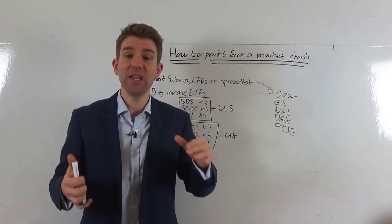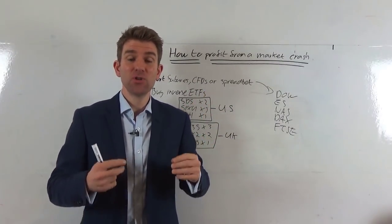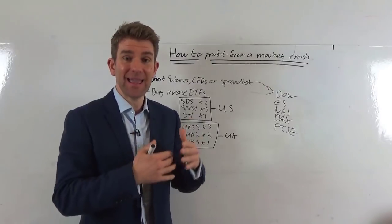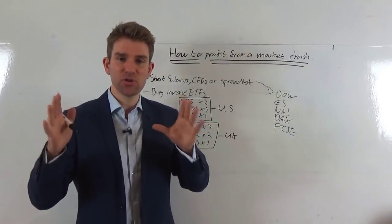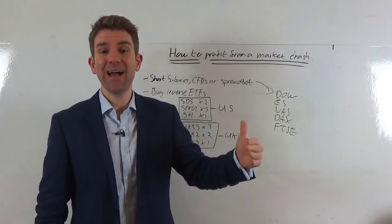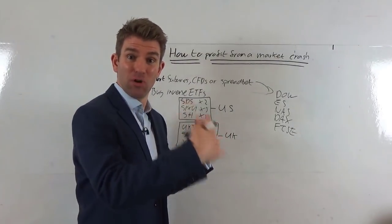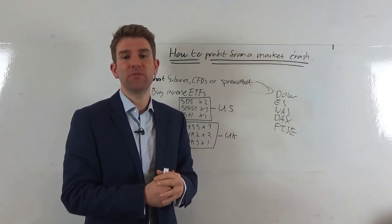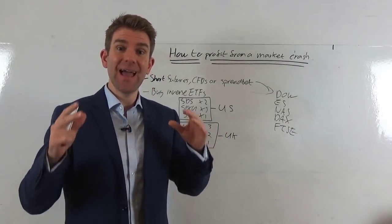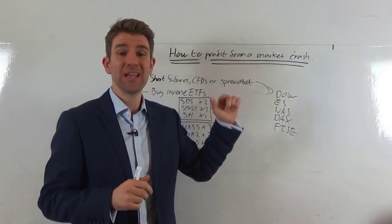We can go one step further than that and we can buy double and triple leverage ETFs which aim to replicate the underlying asset two or three times and inverse. So FTSE is going down one percent, this triple leverage will be up three percent on the day, or it'll be up two percent on the day if it's a double leverage ETF. So you can see how we can seriously make some profit from those.